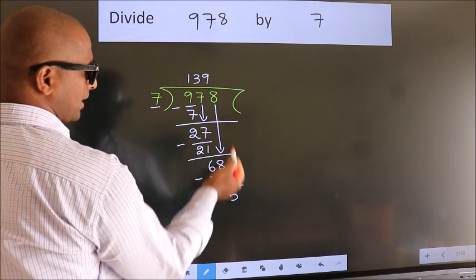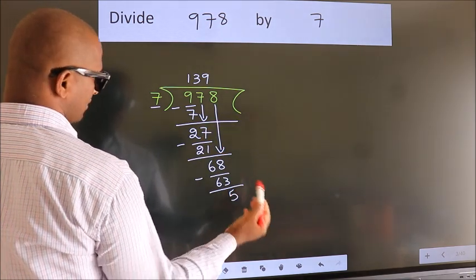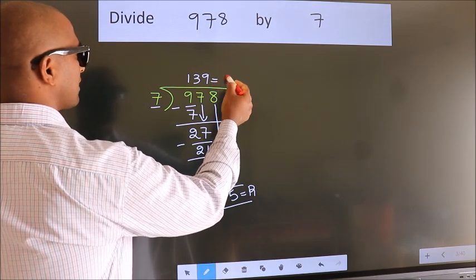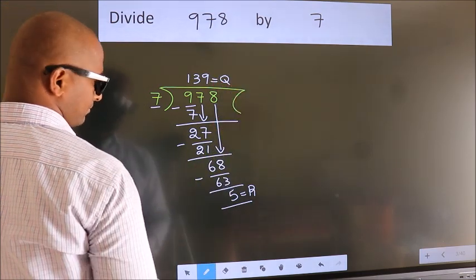No more numbers to bring it down. So we stop here. This is our remainder. This is our quotient. Here we go.